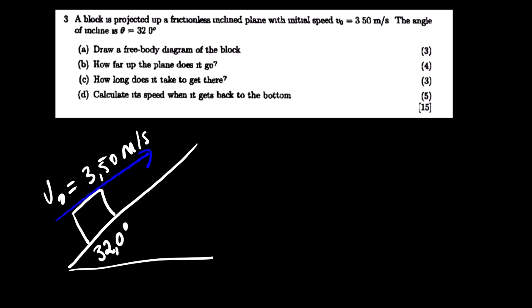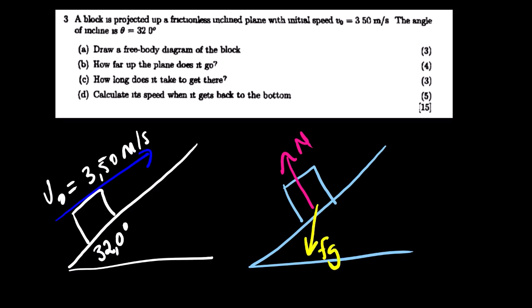Then looking at the picture form of this scenario, we have something like this where the initial velocity of the block is 3.50 meters per second. The angle is 32.0 degrees. Then the displacement is in this direction. Looking at the force diagram of this scenario, we have normal force, we have Fg, then we have the components of Fg which is Fg perpendicular which is mg cos theta. Then we also have its horizontal component which is Fg parallel or horizontal fx mg sin theta.